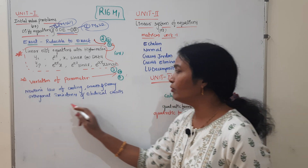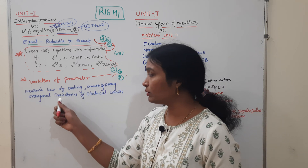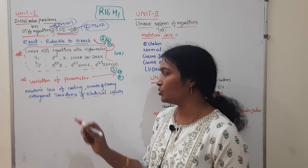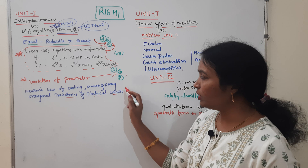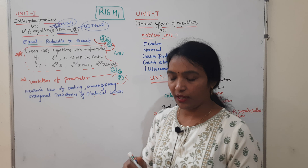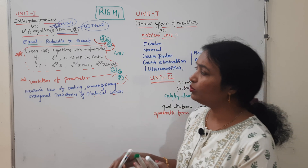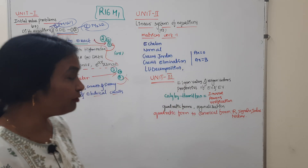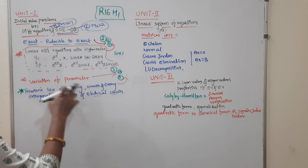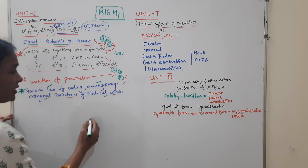Newton's Law of Cooling and Growth and Decay are very important. It is important to use the Orthogonal Trajectory. You also use Electrical Circuits. The 4 methods are: Newton's Law of Cooling, Growth and Decay, Orthogonal Trajectory, and Electrical.